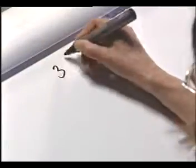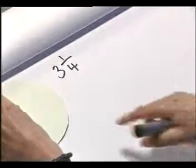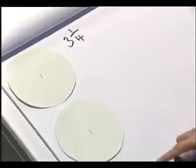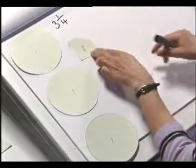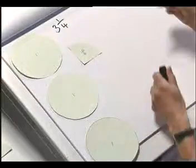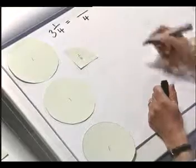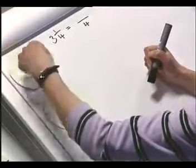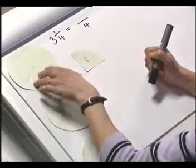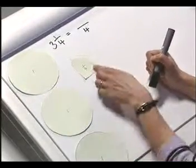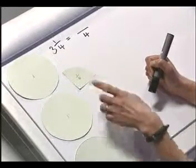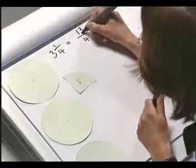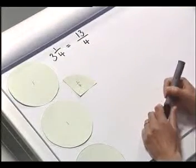Now let's have a look at doing the reverse process. If we start with a mixed fraction, how do we turn it into an improper fraction? Let's look at three and a quarter. We've got three whole ones and one quarter, and what we want to turn it into is all quarters. A whole one split into quarters needs four quarters — so we have four there, another four there, another four there, plus this one. So we've got three fours, which is twelve, plus the one, gives us thirteen quarters. So three and one quarter is exactly the same as thirteen quarters.